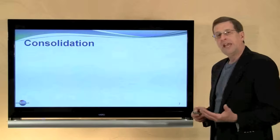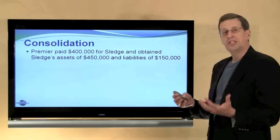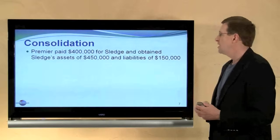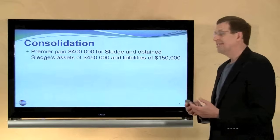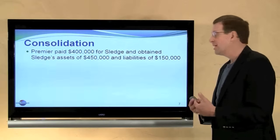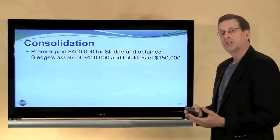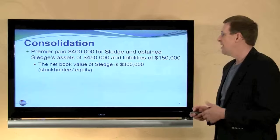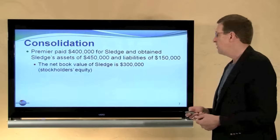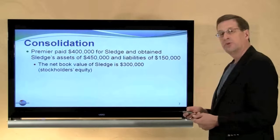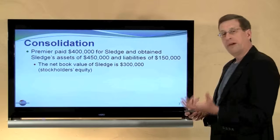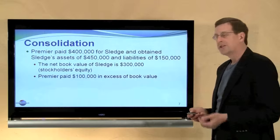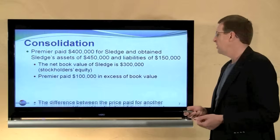Part of the accounting issue here is to consider that purchase differential — that premium that was paid. Premier paid $400,000 for Sledgehammer, obtaining Sledge's assets carried at $450,000 and assuming all of Sledge's liabilities carried at $150,000. That is, the equity or net book value of Sledge was $300,000. We paid $400,000, so we have a $100,000 difference to explain or account for. That's our purchase differential or premium.